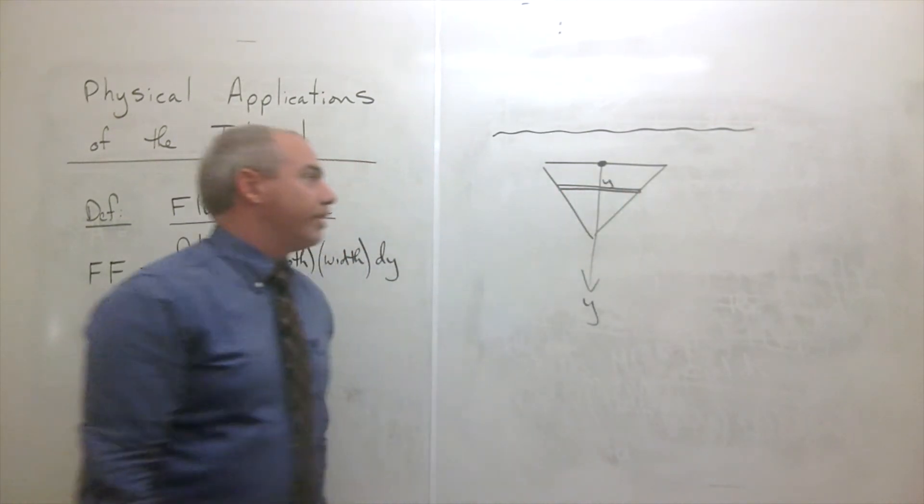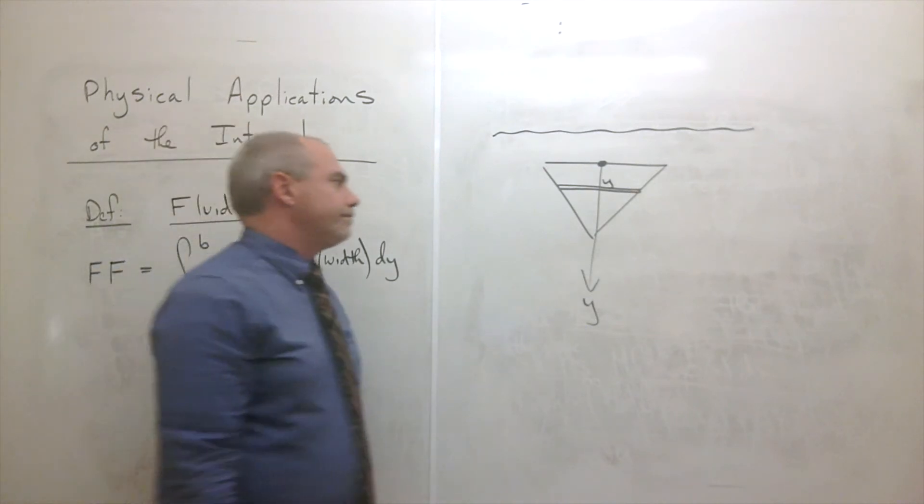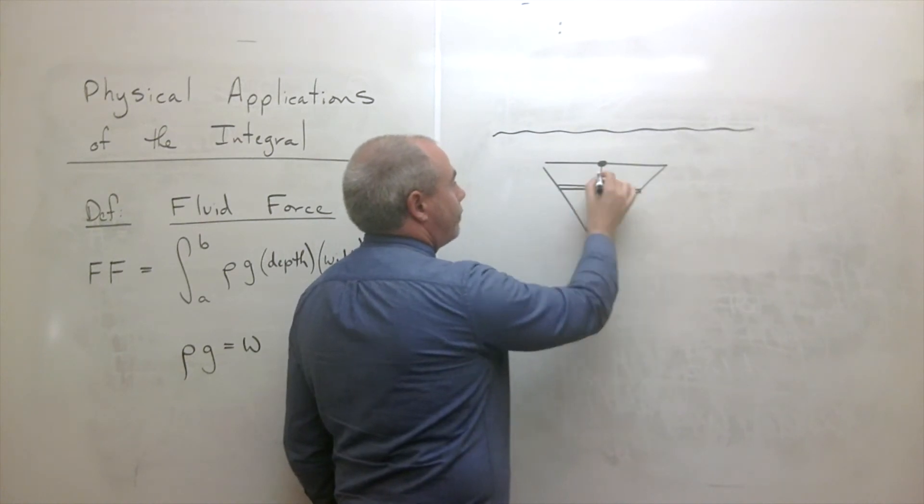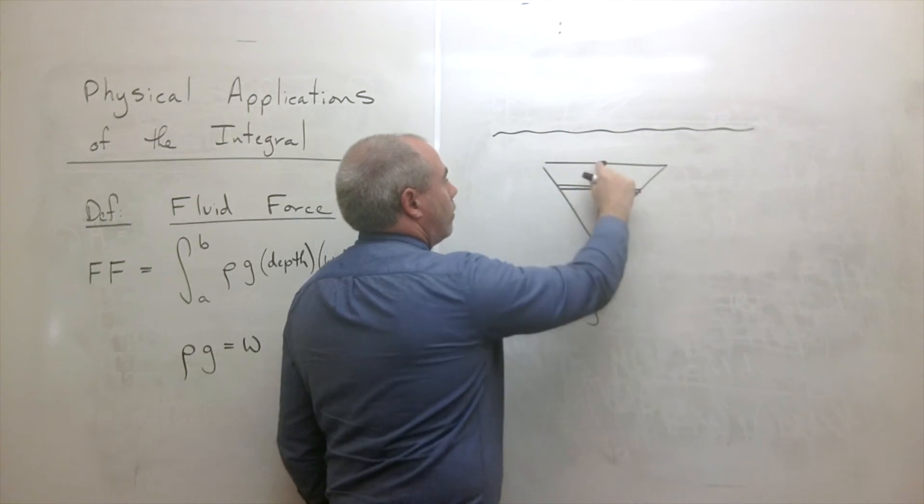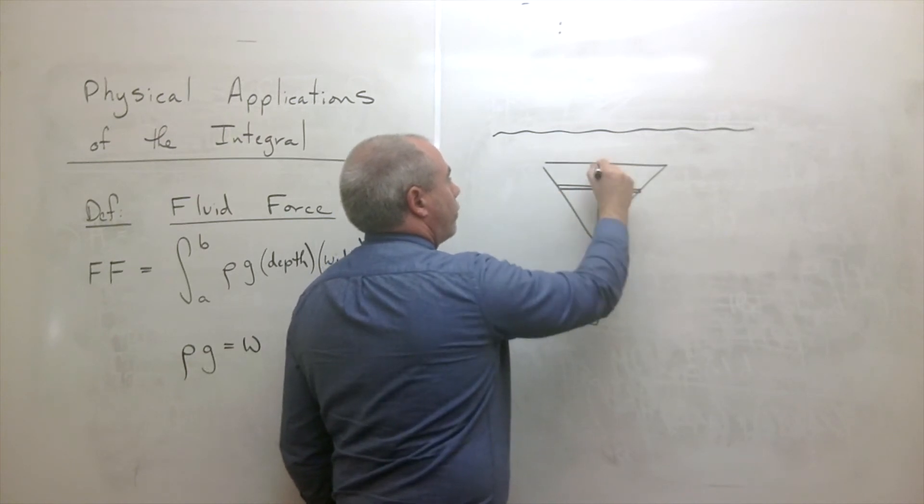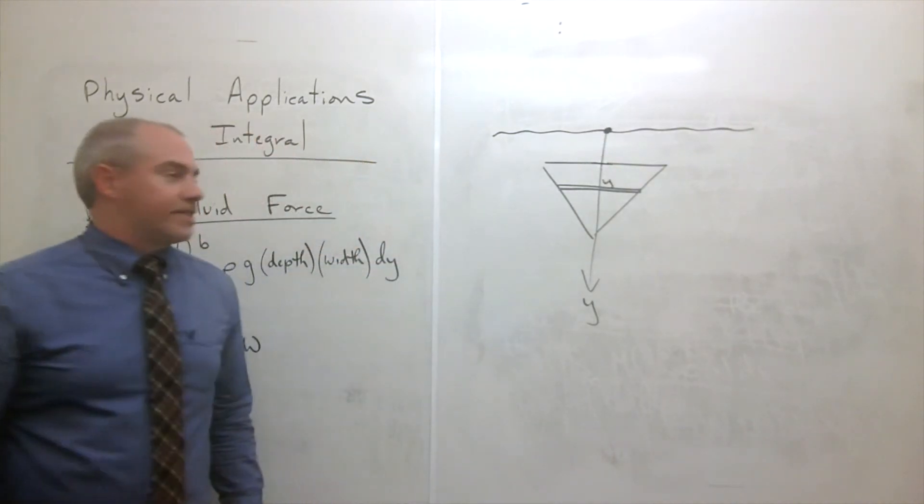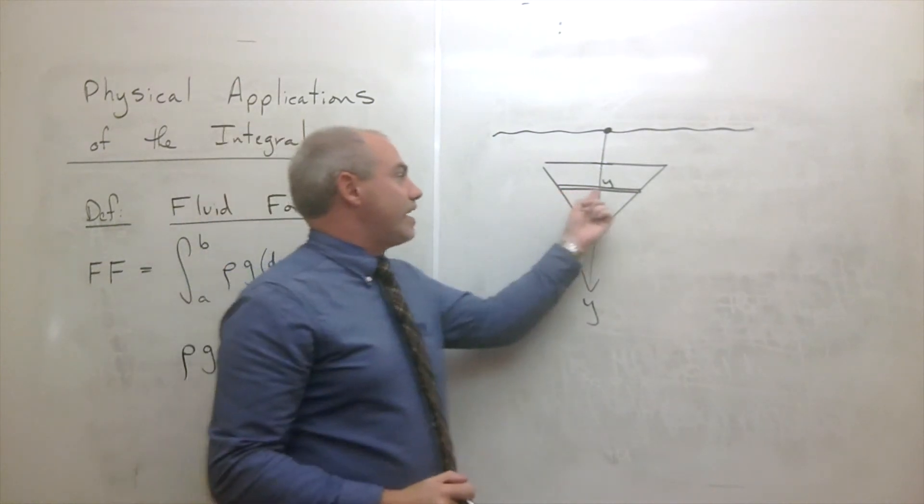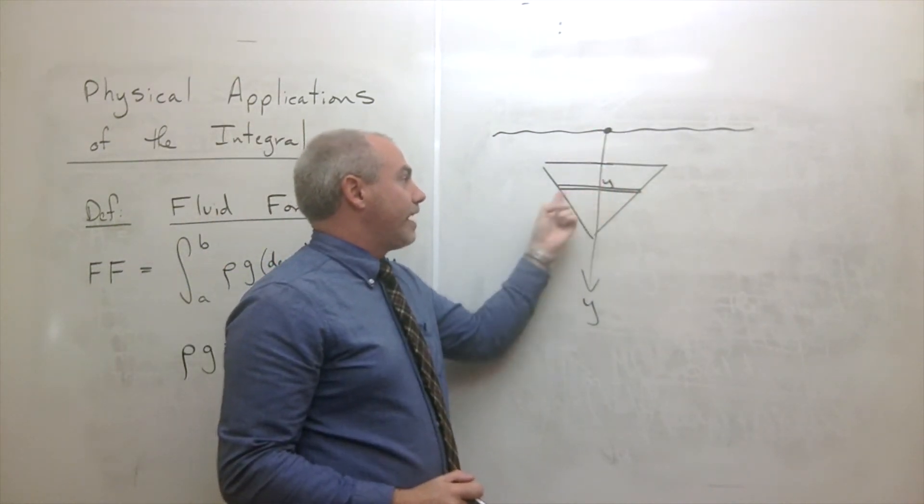Let's say that point we're at, a depth of y. Now if this thing is at a depth of y—let's go ahead and put the origin all the way at the top of the water. That will make it a little bit more clear because now depth and y will be the same thing. If we're at a depth of y, so we're y deep, then how much pressure is there on this little strip?